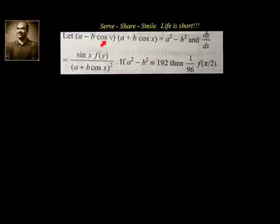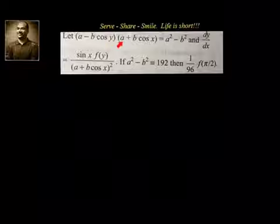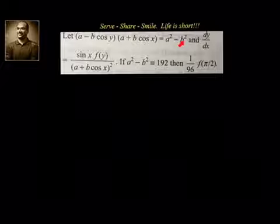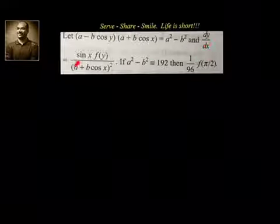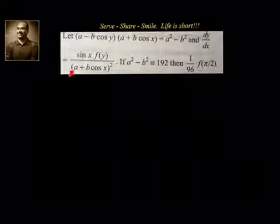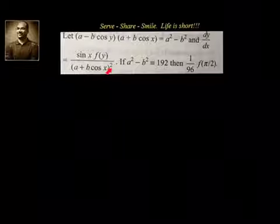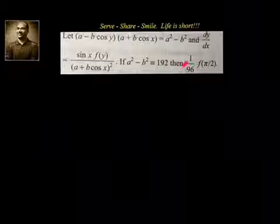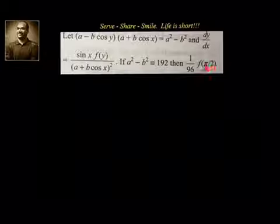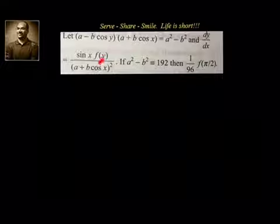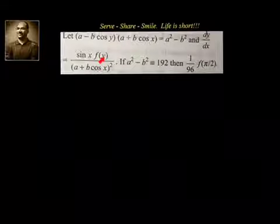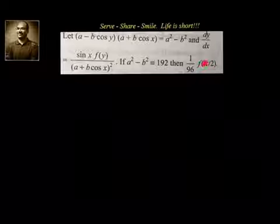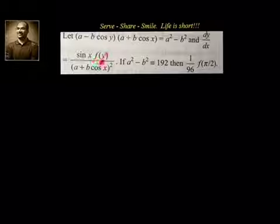We have been given that (a minus b cos y)(a plus b cos x) = a² minus b², and dy/dx = sin x · f(y) / (a plus b cos x)². If a² minus b² is 192, find (1/96) · f(π/2). So we need f(π/2), meaning we have to find out what f(y) is, then substitute y = π/2. First we have to understand what f(y) is.